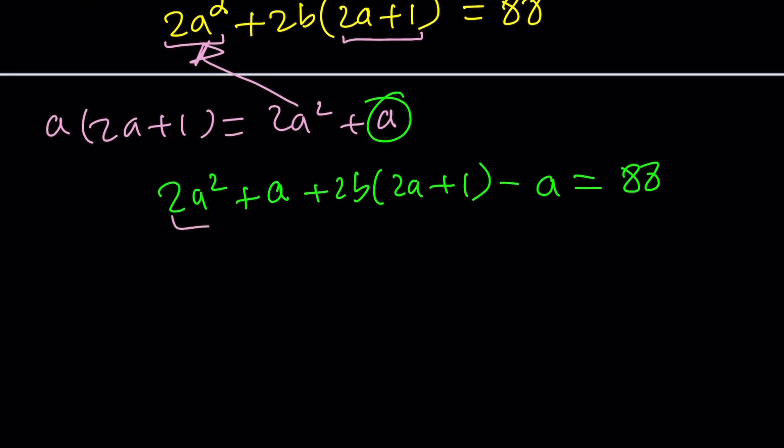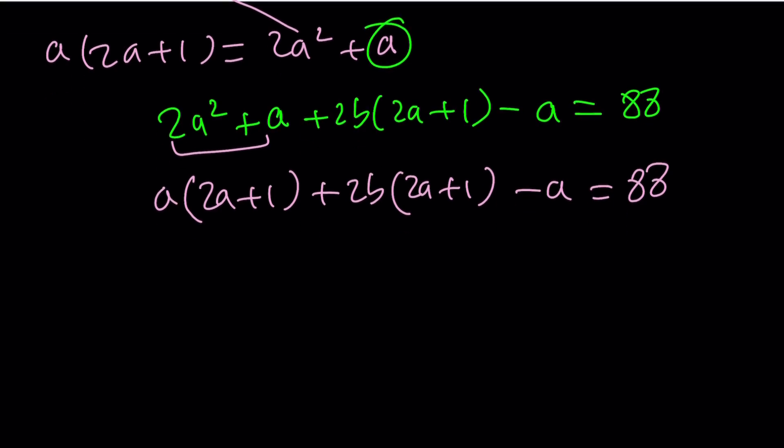Now we know that this is factorable. We can take out an a and write this as a(2a + 1), and now this is 2b(2a + 1), and there's an extra a here, which we'll take care of in a little bit. Now we know that 2a + 1 is a common factor, so we can factor that out, and we get (2a + 1)(a + 2b) - a = 88.